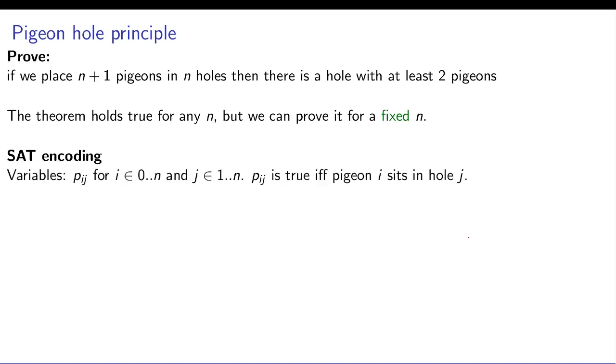How do you do SAT encoding? First you say that variable p_ij says that the ith pigeon is sitting on jth hole. That is represented by variable p_ij.